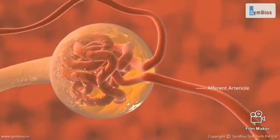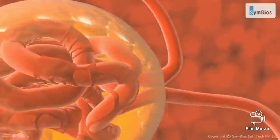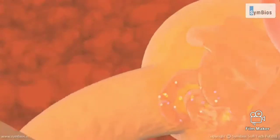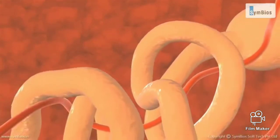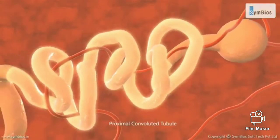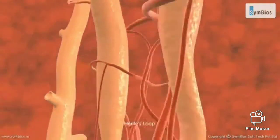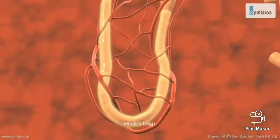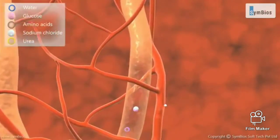After the filtration process, blood leaves the glomerulus through the efferent arteriole. The fluid formed in this way is called glomerular filtrate. From the Bowman's capsule, the glomerular filtrate passes through the proximal convoluted tubule and then into the nephron loop, also called Henle's loop.